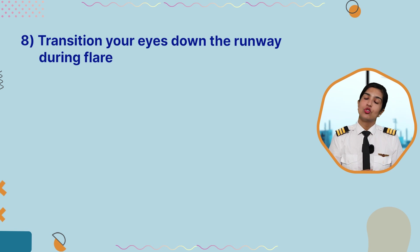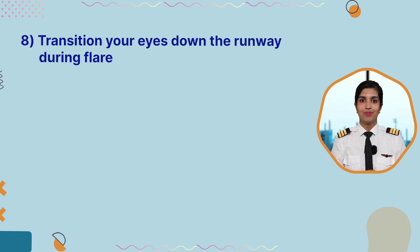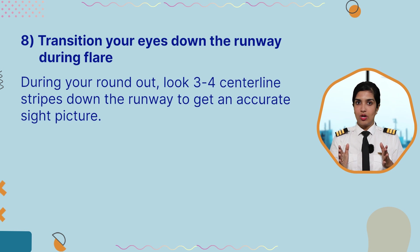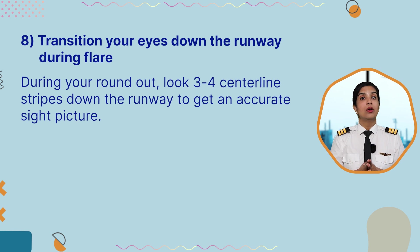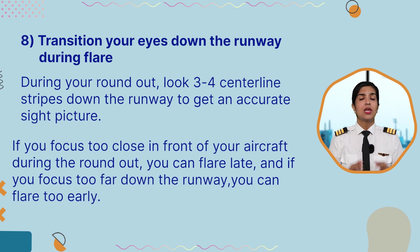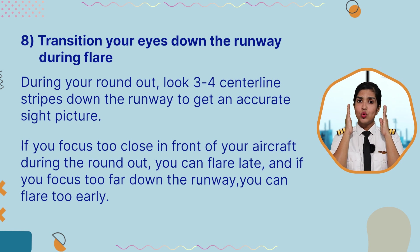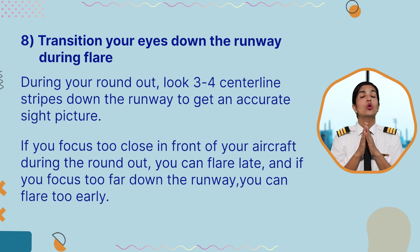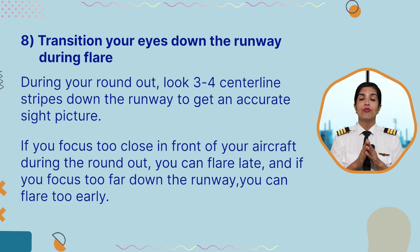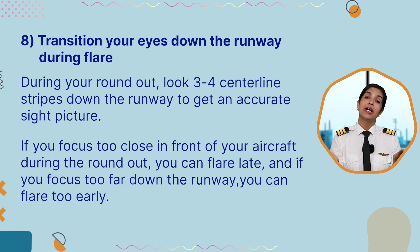Point number eight is to transition your eyes down the runway during the flare. During your roundout, look for the three to four centerline stripes down the runway to get an accurate sight picture. If you focus too close in front of your aircraft during the roundout, you will flare late. And if you focus too far down the runway, you will flare early.